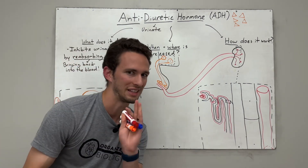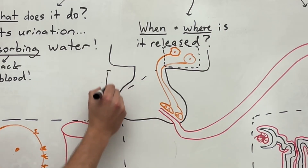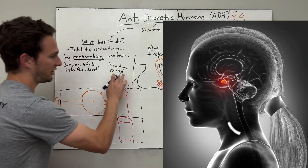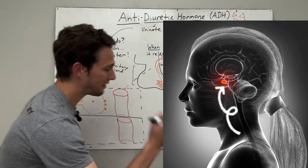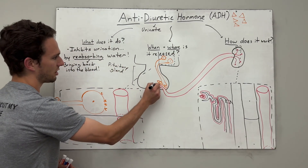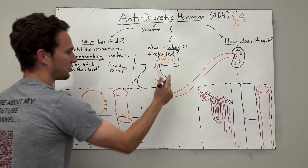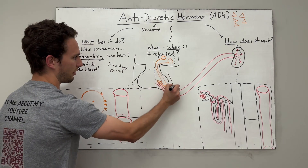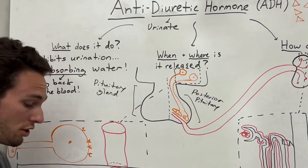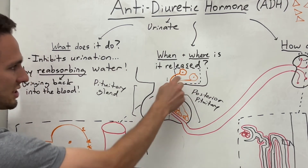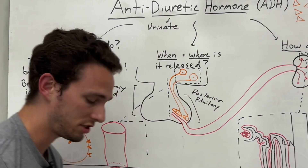So let's talk about first where it's released from. You see this structure right here? This is actually the pituitary gland, and the pituitary gland is called the master regulator gland. It's got like nine different hormones it secretes, and we divide it up into two sections. The anterior section is here on the left, and the posterior, or the backside, will be here on the right. So we're going to be focusing on the posterior pituitary gland, and you can see that there are orange cells — these are called neurons — and they are going to be housed in the hypothalamus, which is this brain region right above the pituitary gland.